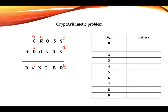Let us write down the alphabets assigned so far: one is assigned to D, two is assigned to S, three is assigned to A, four is assigned to R, and nine is assigned to C. The next available largest number is eight.